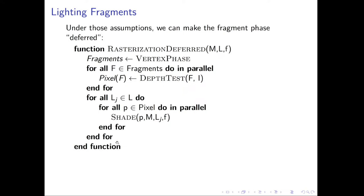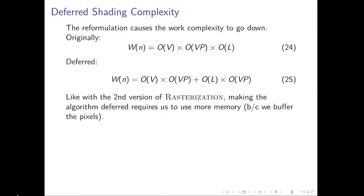In the last session we ended up with this formulation of the rasterization deferred algorithm. We will now quickly analyze the runtime complexity. The work complexity of rasterization deferred is related to the work complexity of rasterization 2, since rasterization deferred is based on that algorithm. We're now assuming a variable number of lights, so the number of light sources also factors into the equation.